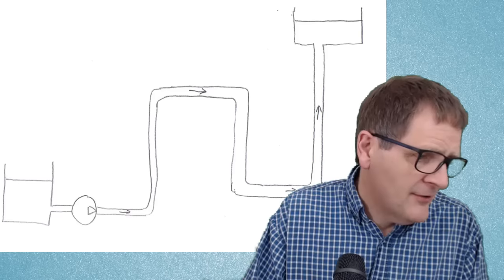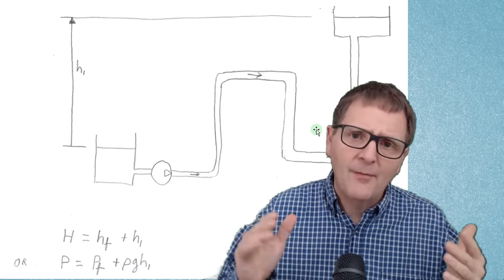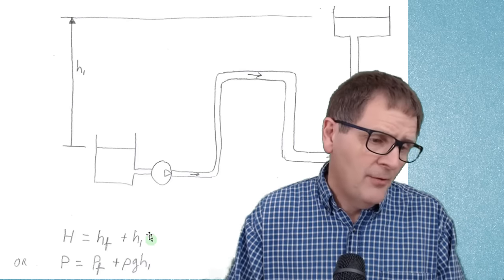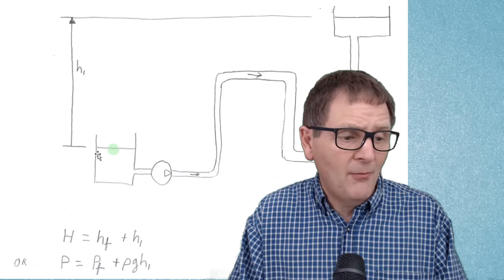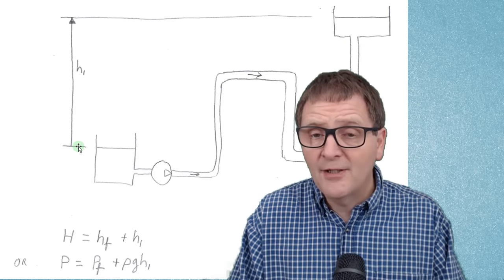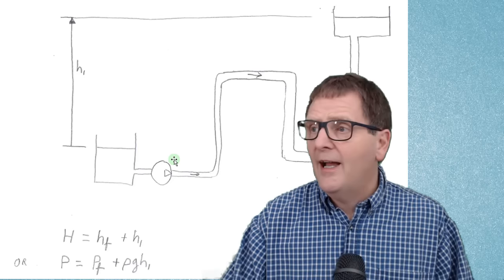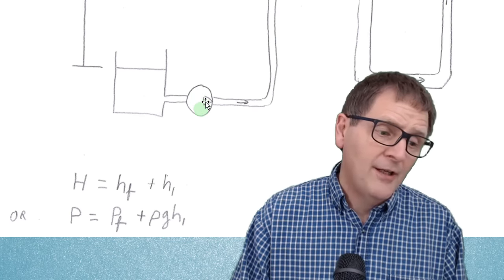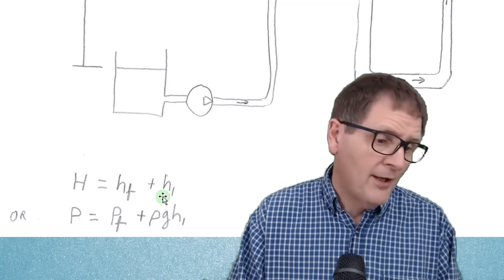Moving on, let's look at what pressure or head you're going to require to drive the fluid along the pipe. Typically for a system like this, the tank where you're taking the fluid is at one level and you're pumping the fluid up to a higher level. The head difference between the two tanks is H1. For a given flow rate along that pipe there will also be a friction head loss, and the total head the pump has to deliver is H = HF + H1.